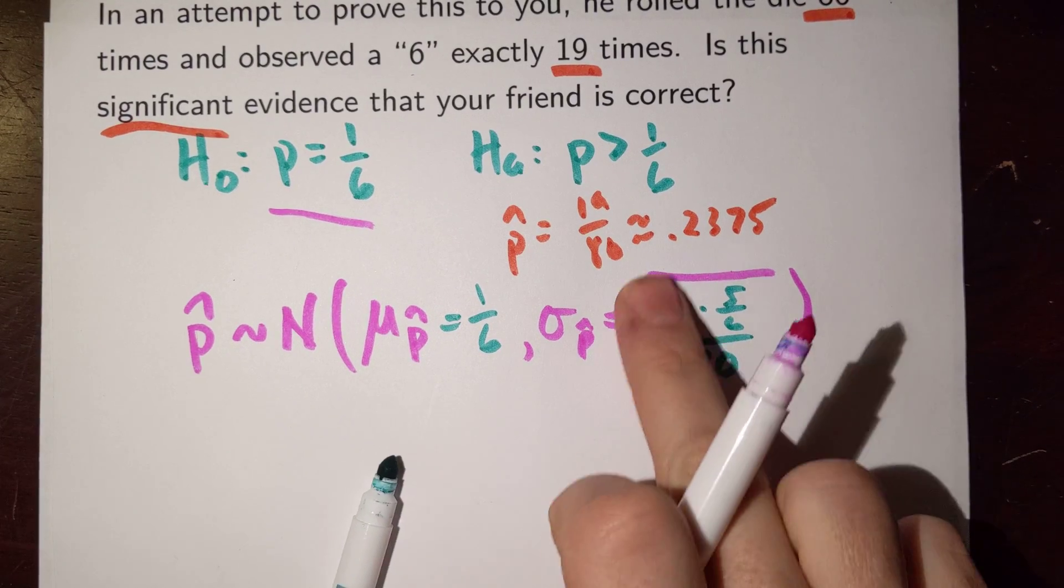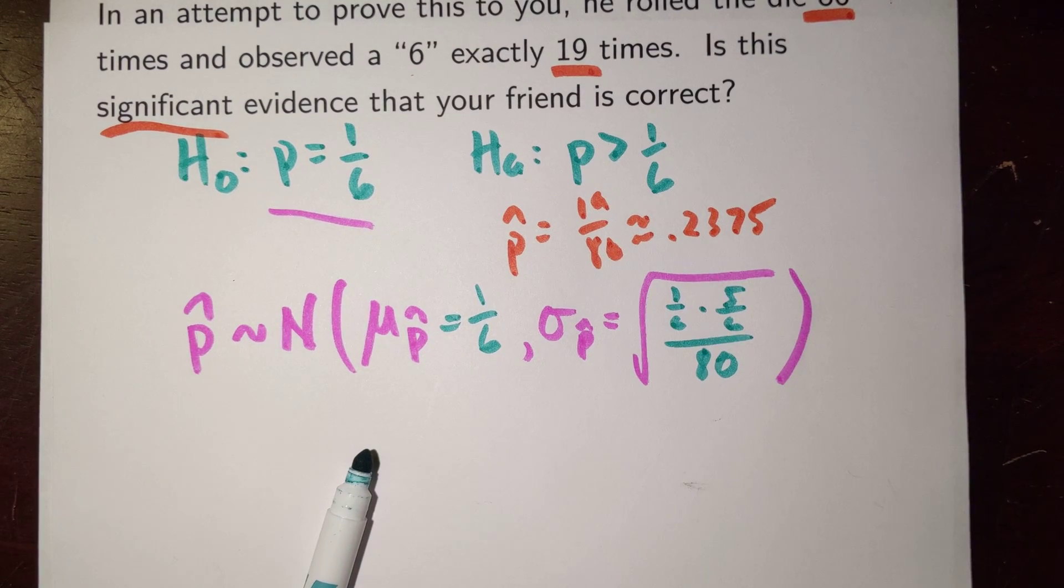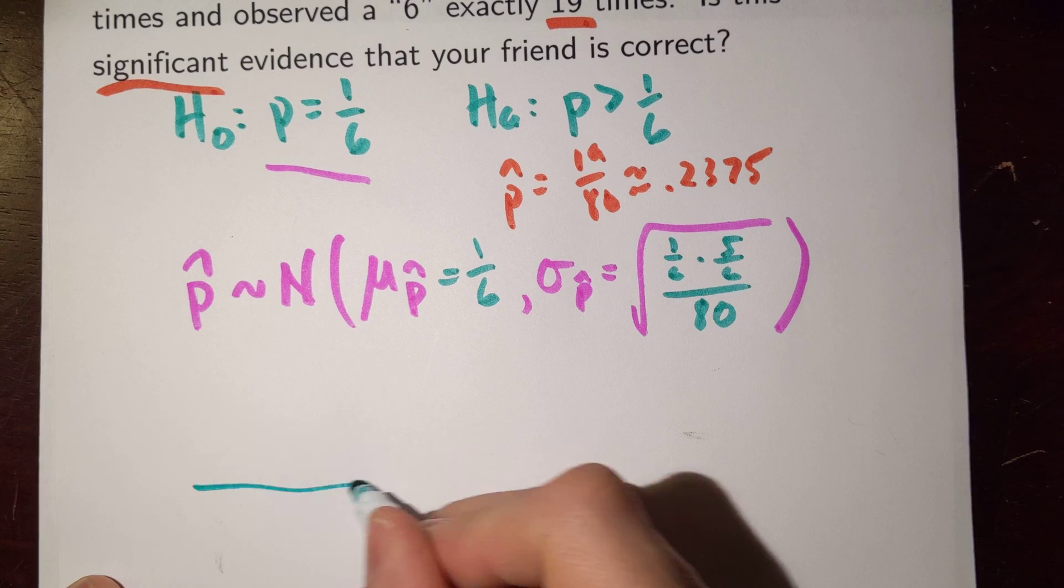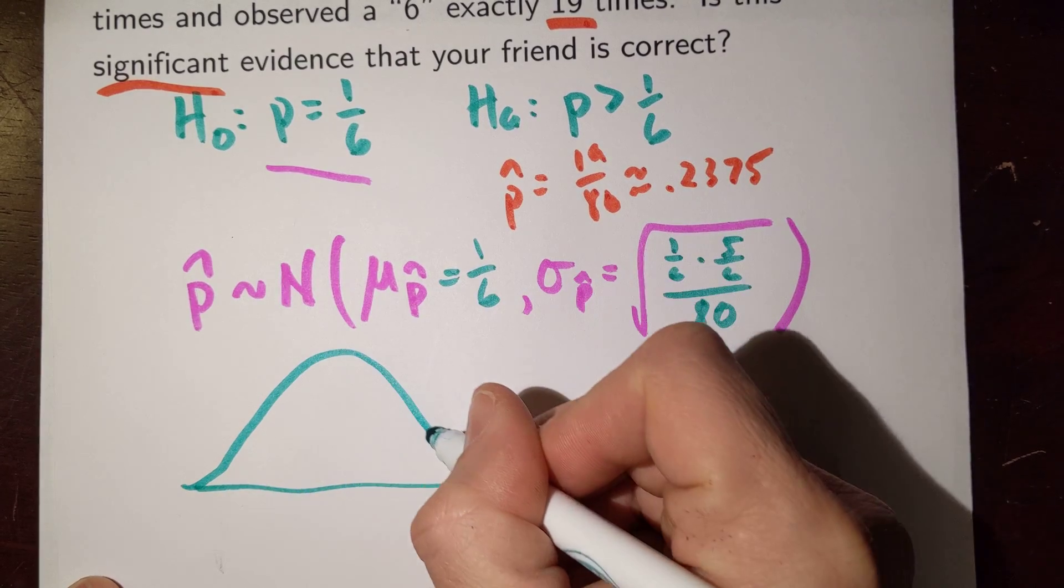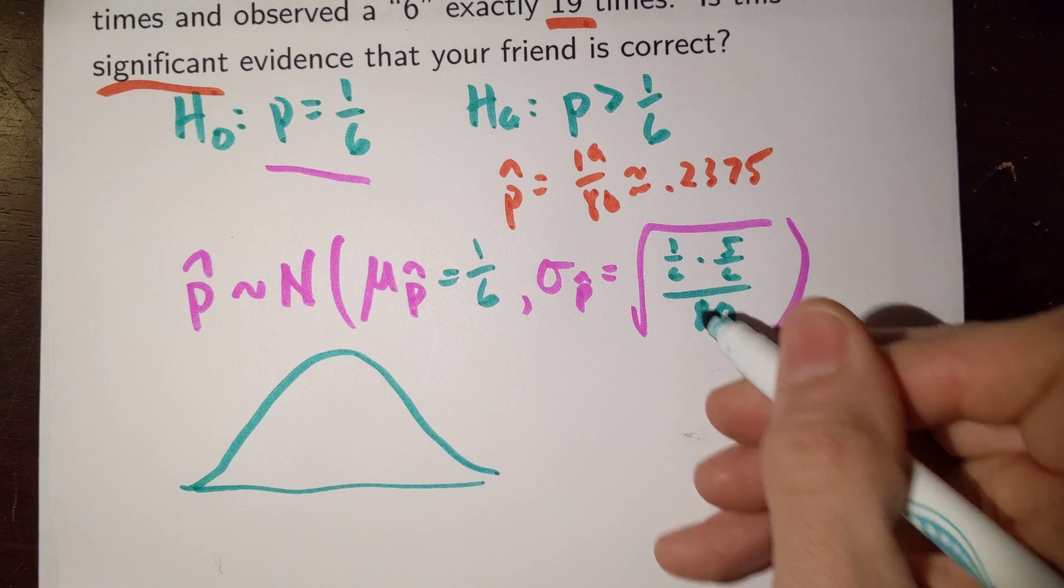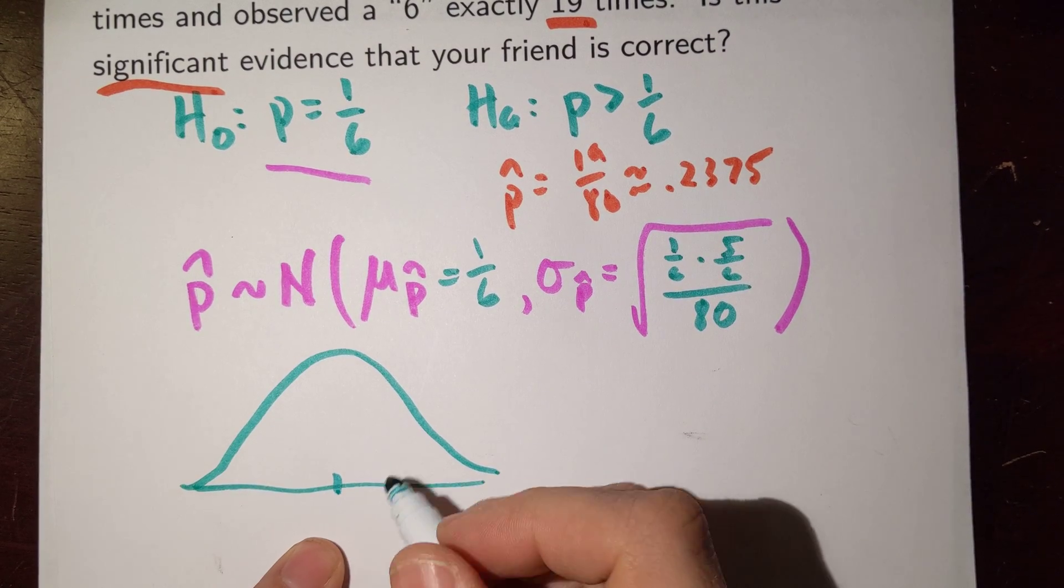And so how far off is this guy? Well, we could try to draw this normal distribution. It has this mean of 1/6 and the standard deviation of this guy. So I could put that here.